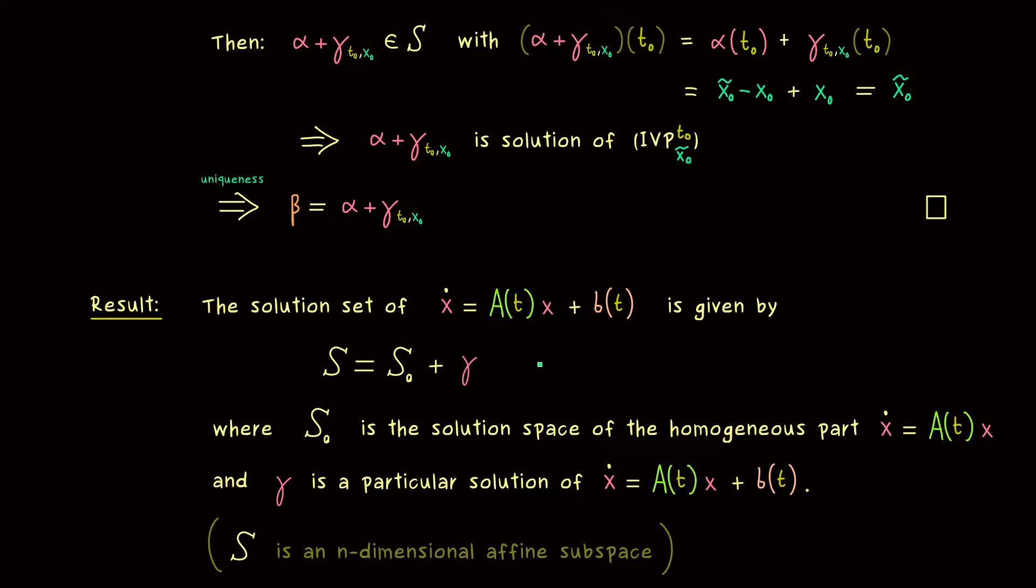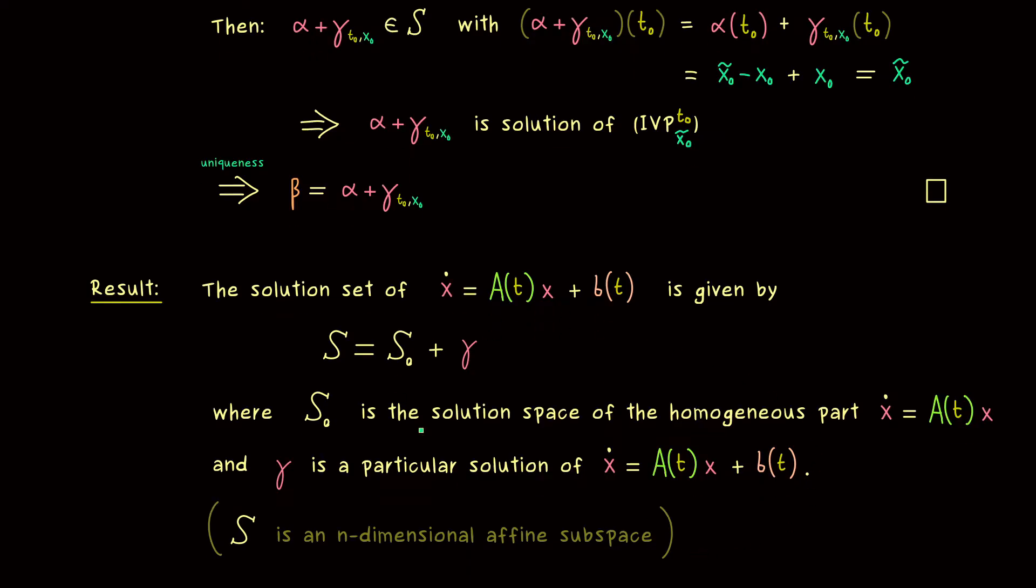So if we have a 2×2 matrix here, we have an affine subspace of dimension 2. And I would say, let's look at some examples with the next videos. So I really hope we meet there again. And have a nice day. Bye bye.